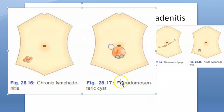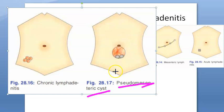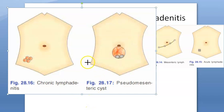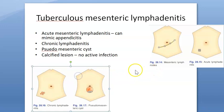Pseudo-mesenteric cyst: this is caseation of the mesenteric lymph nodes confined within the two leaves of the mesentery. Due to adhesions, the intestine can get kinked or twisted, causing intestinal obstruction.